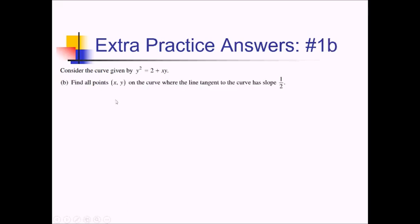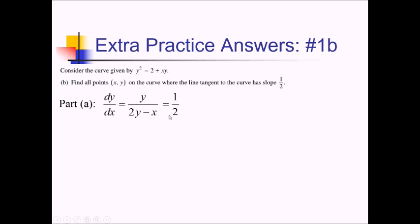For this part of the problem, they want to know all points x comma y on the curve where the tangent line has a slope of 1 half. Recall from part a that our derivative was y over 2y minus x. We want all x comma y values where this equals 1 half. We just have to solve for x and y in this equation, starting by cross-multiplying to get rid of the fractions.